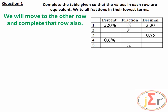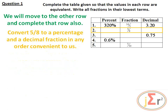Moving to the next row: the headings are percent, fraction, and decimal. The fraction 5/8 is given, and we need the percentage and decimal representations. We may convert 5/8 to a decimal fraction first, then to a percentage, or vice versa. In an examination, use whatever is most convenient and time-efficient.